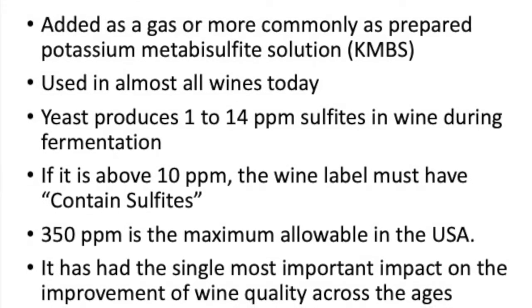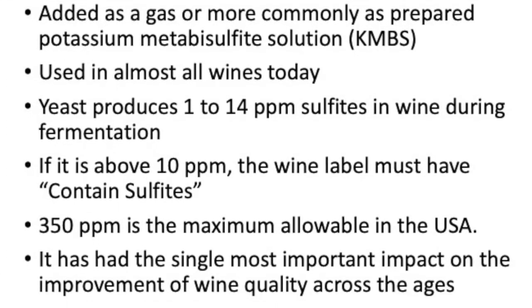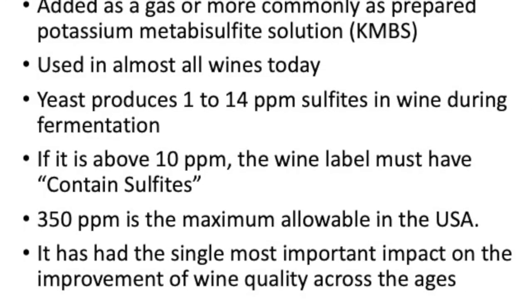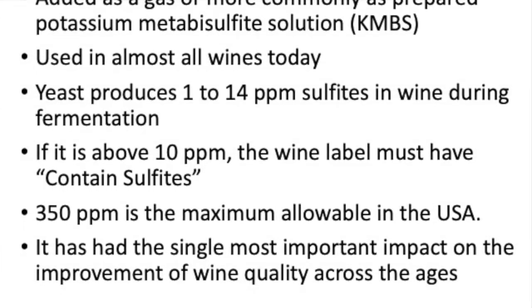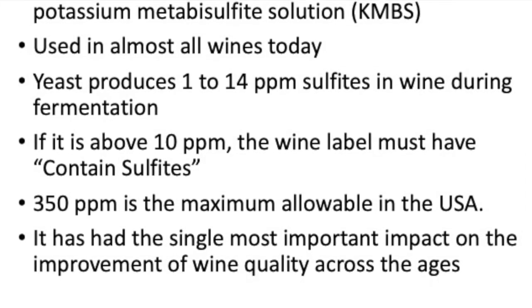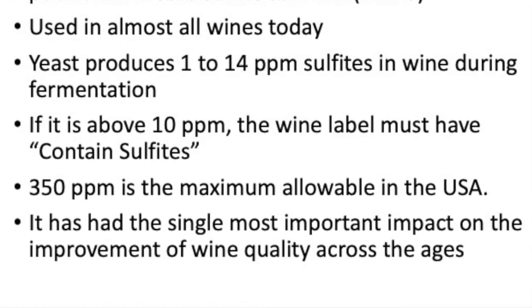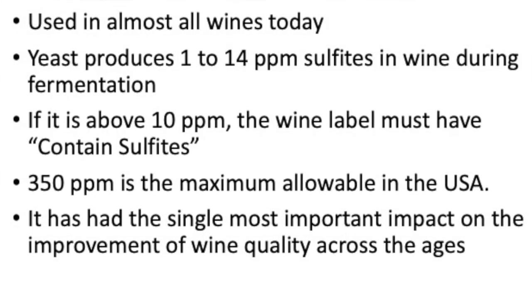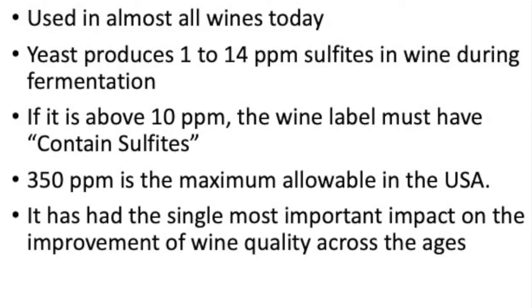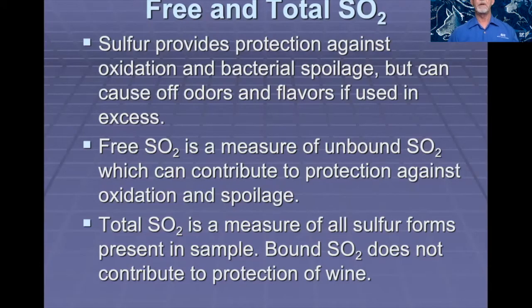If SO2 is above 10 parts per million, the wine label must have 'contains sulfites' on it. 350 parts per million of SO2 is the maximum allowable in the USA, and adding SO2 has had the single most important impact on the improvement of wine quality across the ages. Sulfur provides protection against oxidation and bacterial spoilage, but can cause off odors and flavors if used in excess, so we want to know exactly what quantities we have in our wine.